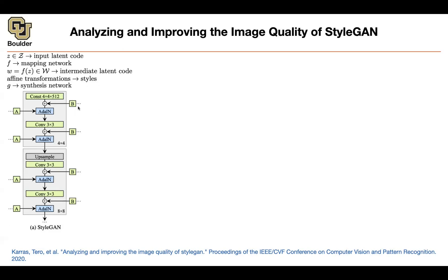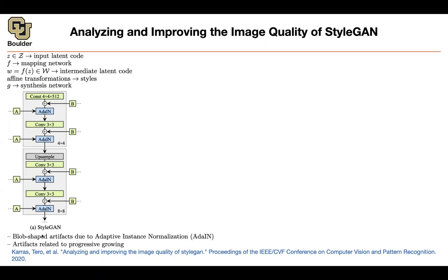The Ws go through affine transformations to give you the styles. Noises go through a simple multiplication by a scale and then get injected. You also have progressive growing ideas — we know how to train a neural network in a progressive growing fashion. You do that and then show the generated images to your manager.